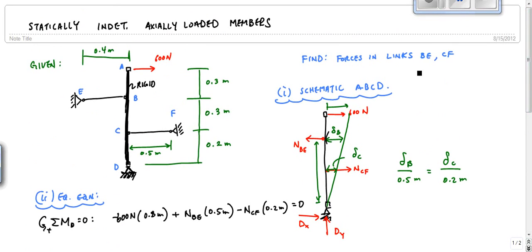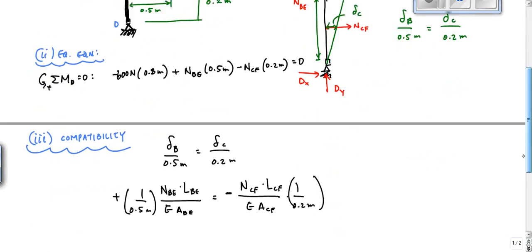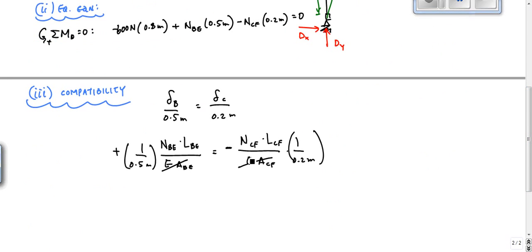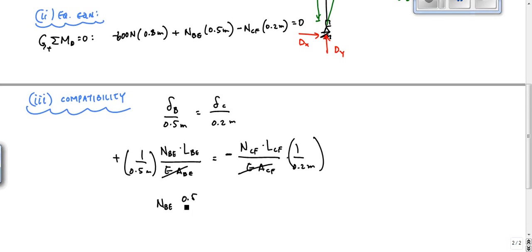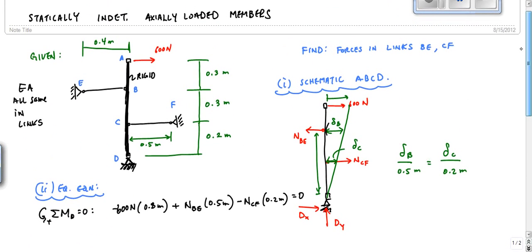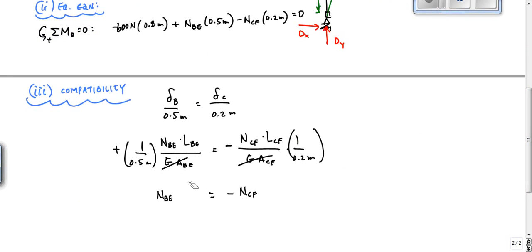So now, then our relationship is going to be okay. And we would get that N_BE times L_BE. What was L_BE? That was 0.5 meters. Oh, that works out nice. 0.5 over 0.5 is equal to minus N_CF times L_CF. What was L_CF? Oh, L_CF was 0.4. 0.4 over 0.5 times 0.5 over 0.2.